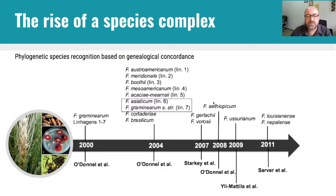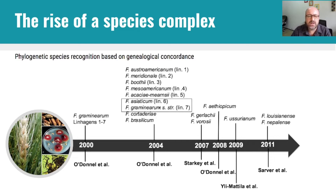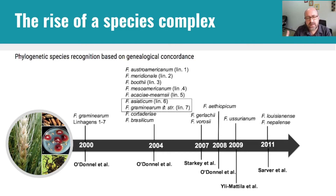We know that Fusarium graminearum is the major pathogen causing Fusarium head blight in Brazil, but we didn't know about all the possibilities of other species causing Fusarium head blight. We learned from different studies that Fusarium asiaticum and Fusarium graminearum are the most common pathogens in other countries, but in Brazil we had no idea 15 years ago when we started to study more deeply the cause of Fusarium head blight. We were interested in looking at the diversity of FHB pathogens with an emphasis on the Fusarium graminearum species complex.